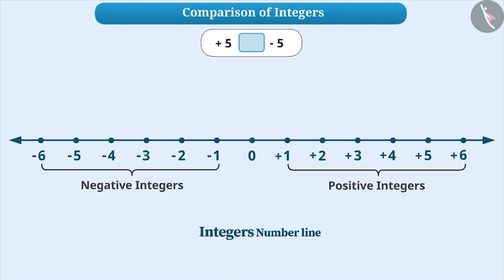By doing so, we have obtained the number line of integers. Here we can say that all positive numbers are to the right of 0 and all negative numbers are to the left of 0. Note that this is a horizontal number line.